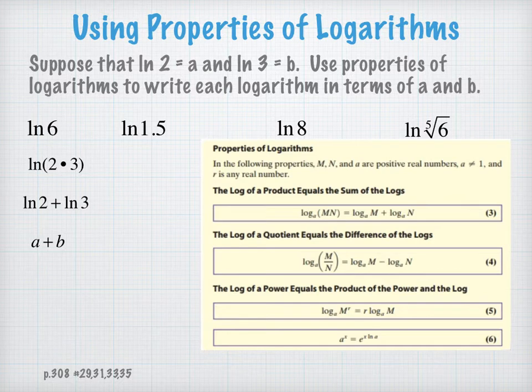Now in the second problem, how can I write 1.5 using some combination of the numbers 2 and 3? Well, 2 times 3 is 6, that doesn't work. 2 plus 3 is 5, no. 2 minus 3, no. 2 divided by 3 doesn't work, but 3 divided by 2 does work. 3 divided by 2 is 1.5.